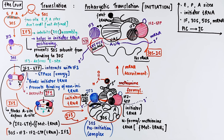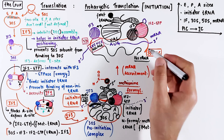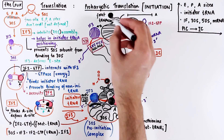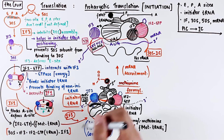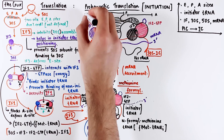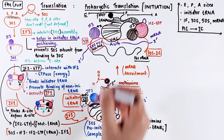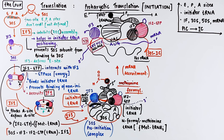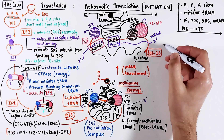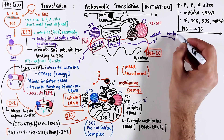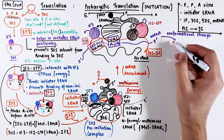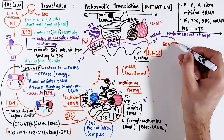In this 30S initiation complex, the A site is defined by initiation factors I and II, the P site is defined by the initiator tRNA, and the E site is defined by initiation factor III. After the formation of this complex, initiation factor III moves a little more towards the edge because of the pairing between the tRNA and the mRNA at the start codon. This movement of IF3 causes a conformational change in the initiation complex, giving the 50S subunit a green light to bind to the 30S subunit.